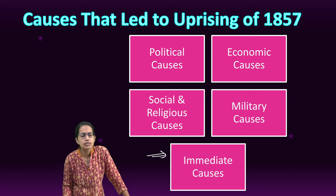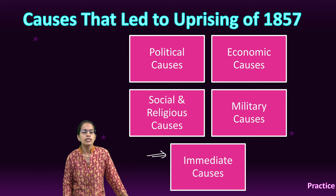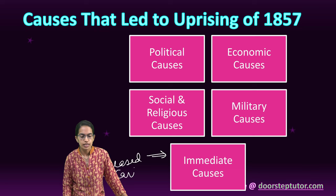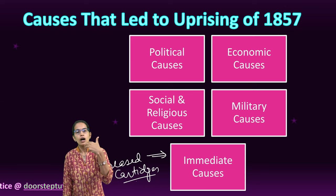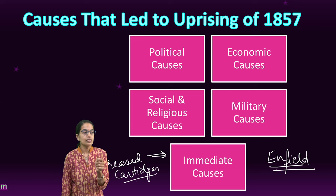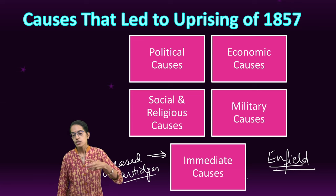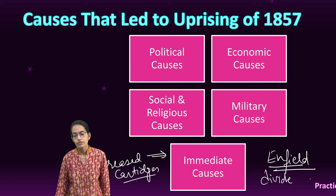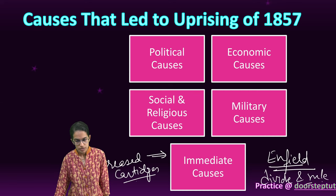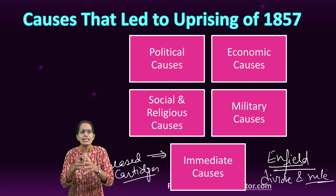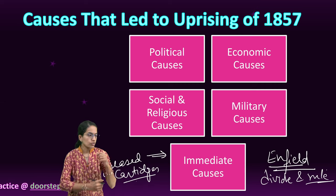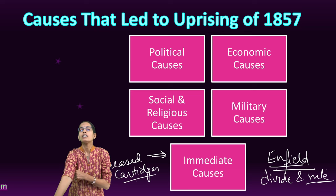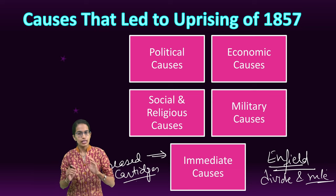The immediate factor was the greased cartridge. The greased cartridges were greased by the fat of cow and pig, and had to be bitten by mouth — this was against the religious sentiments of the people. This immediate cause was basically a reason which led to the divide and rule policy of the Britishers, as they created a divide within Indian society based on religious grounds. That was one of the immediate causes that led to the discontent and the uprising of 1857.